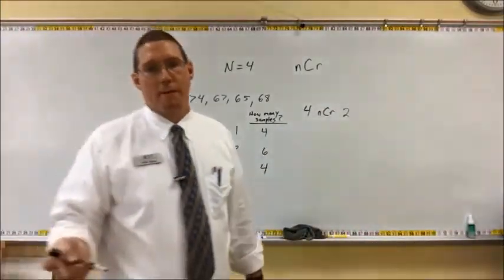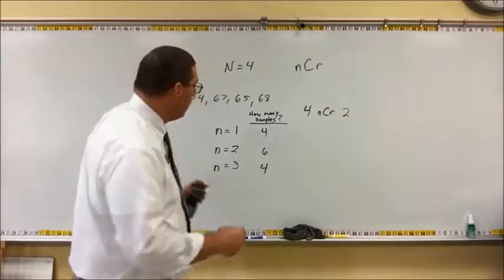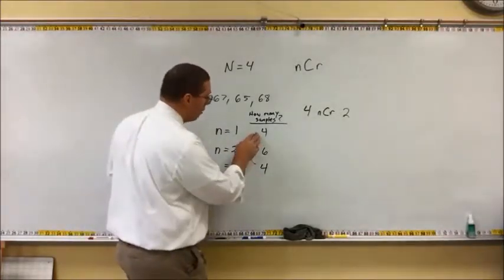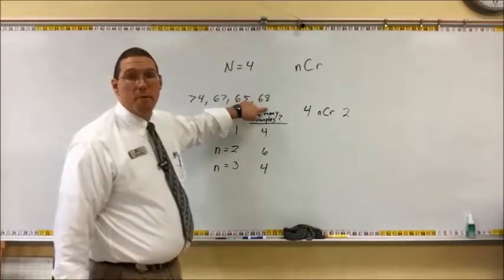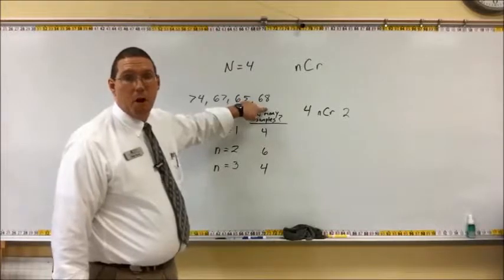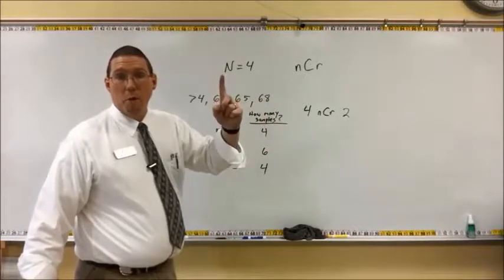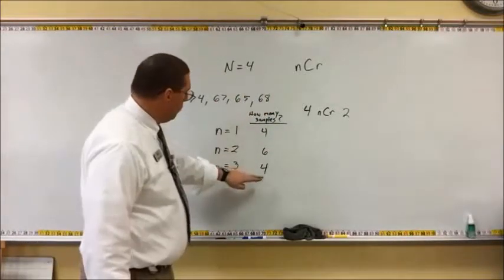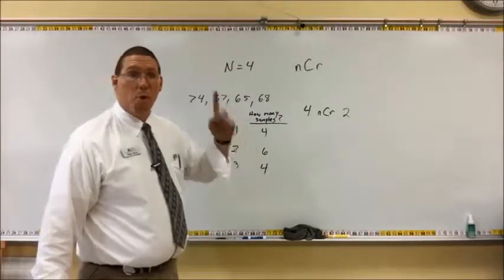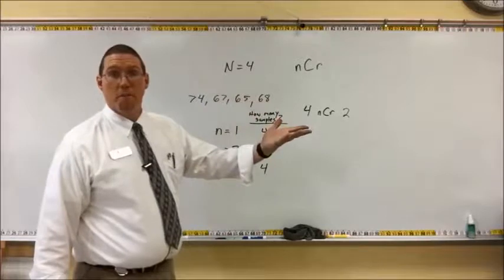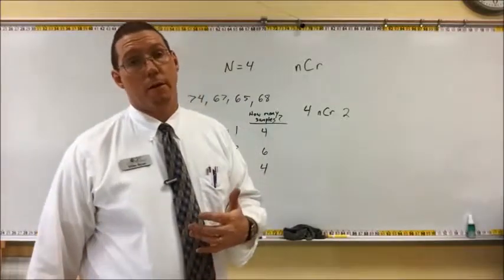You can also use Pascal's triangle to get these answers. On the fourth line, Pascal's triangle reads 1, 4, 6, 4, 1. The 1 represents how many possibilities there are for a sample size of 0 — you can only not take a sample one way. Or if you go all the way up to N equals 4, there's only one way to measure all four of them. But that's a population, not a sample.